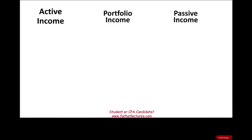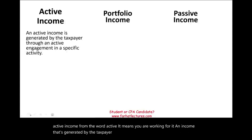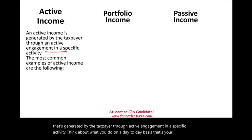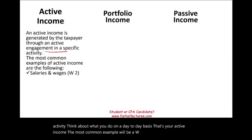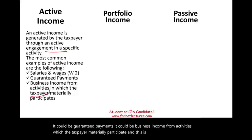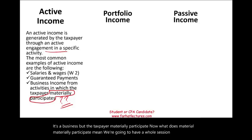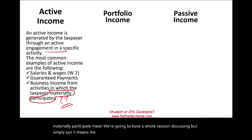The first bucket is active income. From the word 'active,' it means you are working for it — income generated by the taxpayer through active engagement in a specific activity. Think about what you do on a day-to-day basis: that's your active income. The most common example is W-2 salary and wages. It could be guarantee payments, or business income from activities in which the taxpayer materially participates. Materially participates means the taxpayer is actively engaged in the activity on a regular and continuous basis.